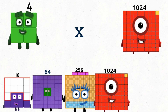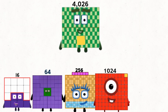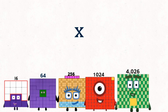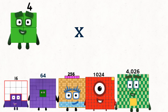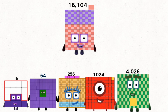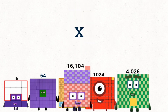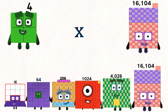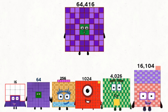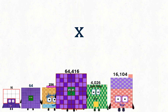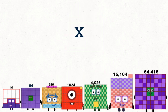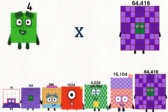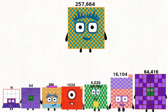4 times 1024 equals 4026. 4 times 4026 equals 16104. 4 times 16104 equals 64,416. 4 times 64,416 equals 257,664.